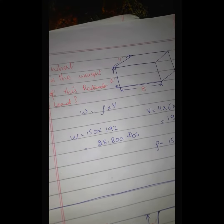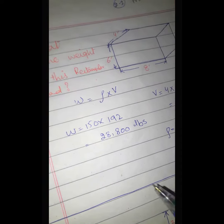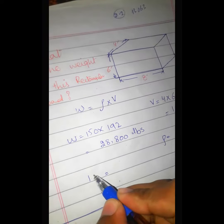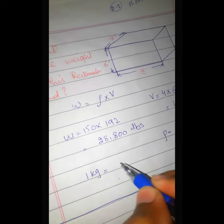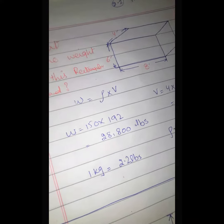This is the weight of this concrete block. You can also convert lbs to kg: 1 kg is equal to 2.2 pounds.